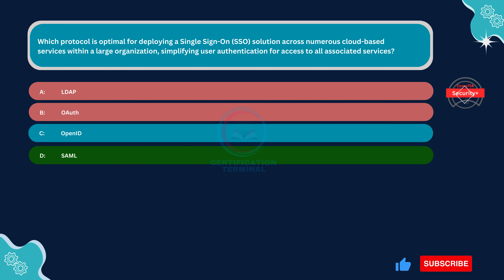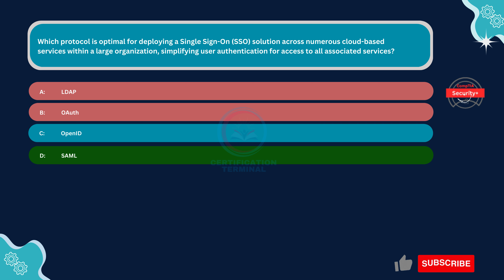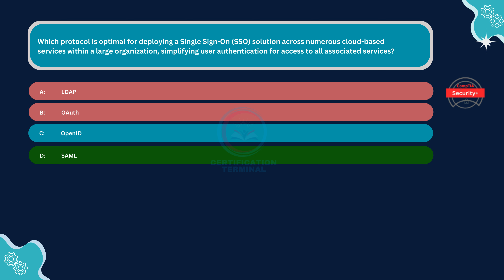Option B, OAuth, is incorrect. Open Authorization, OAuth, is a protocol for authorization, not authentication. While OAuth is commonly used for delegated authorization scenarios such as allowing applications to access user data on other services, it is not designed for SSO. OAuth lacks the features necessary for securely exchanging authentication data between identity providers and service providers, which is essential for SSO solutions.